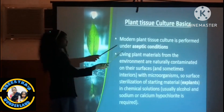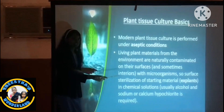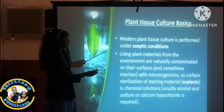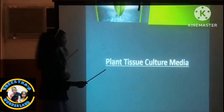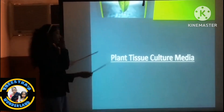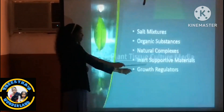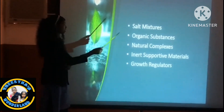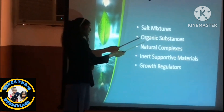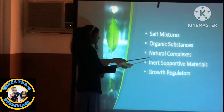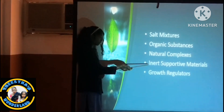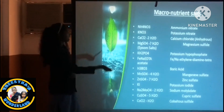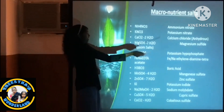Plant tissue culture must be carried out under aseptic conditions and the living plant material should be sterilized. For the plant tissue culture medium, you need a salt which has organic substances, natural complexes, inert supporting materials, and growth regulators. These are the macronutrient salts.